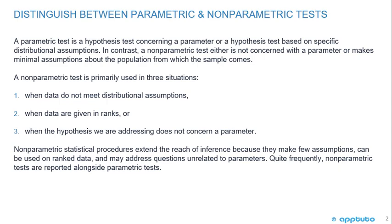A non-parametric test is primarily used in three situations. One, when data do not meet distributional assumptions. Two, when data are given in ranks. Or three, when the hypothesis we are addressing does not concern a parameter.